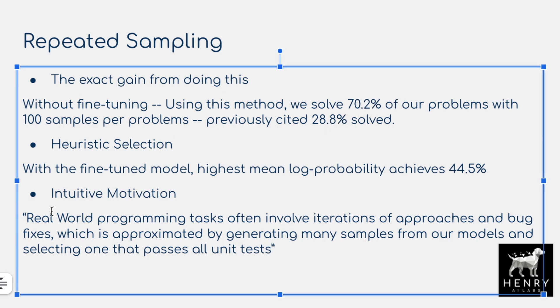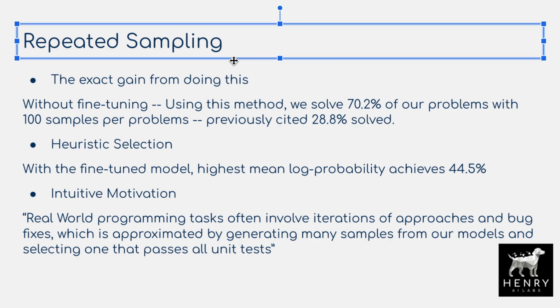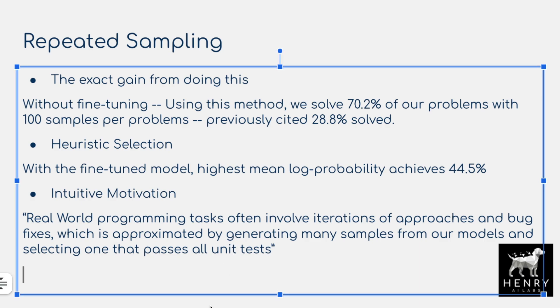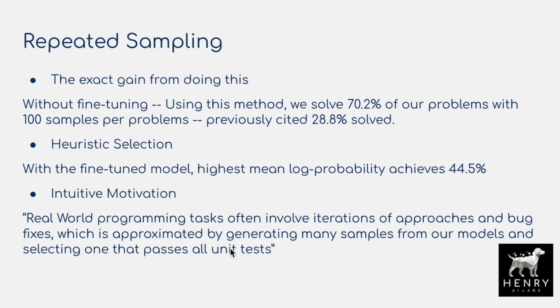They describe an intuitive motivation: real-world programming tasks often involve iterations of approaches and bug fixes, approximated by generating many samples and selecting one that passes all unit tests. It's like when you sit down and write something — you come up with one version, then another. It's the idea of repeated generations for refining the prediction.